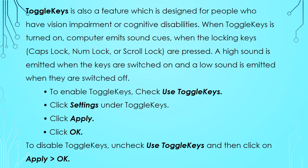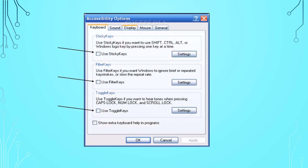Toggle Keys is a feature designed for people who have vision impairment or cognitive disabilities. When Toggle Keys is turned on, the computer emits sound cues when the locking keys — Caps Lock, Num Lock, or Scroll Lock — are pressed. A high sound is emitted when the keys are switched on and a low sound when they are switched off. To enable Toggle Keys, check 'Use Toggle Keys', click Settings under Toggle Keys, then click Apply and OK. To disable, uncheck 'Use Toggle Keys' and click Apply and OK. Look at the figure to understand from where you have to set the Accessibility Options.